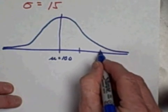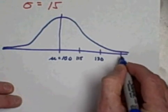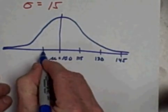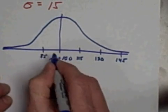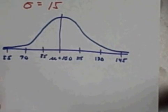So if I put a couple standard deviations on here, I've got 115, I've got 130, I've got 145 to the right. To the left, I've got 85, 70, and then 55.